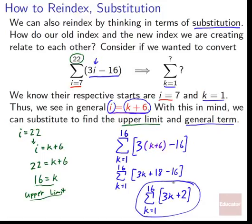Substitution and expanding both work the same way. Substitution is probably a little bit faster and easier, but a little more abstract. The key is: figure out how your original index and your new symbol relate to each other, start with the lower limit, determine the upper limit using that same relationship, then plug in your connection between the two indexes into the expression.